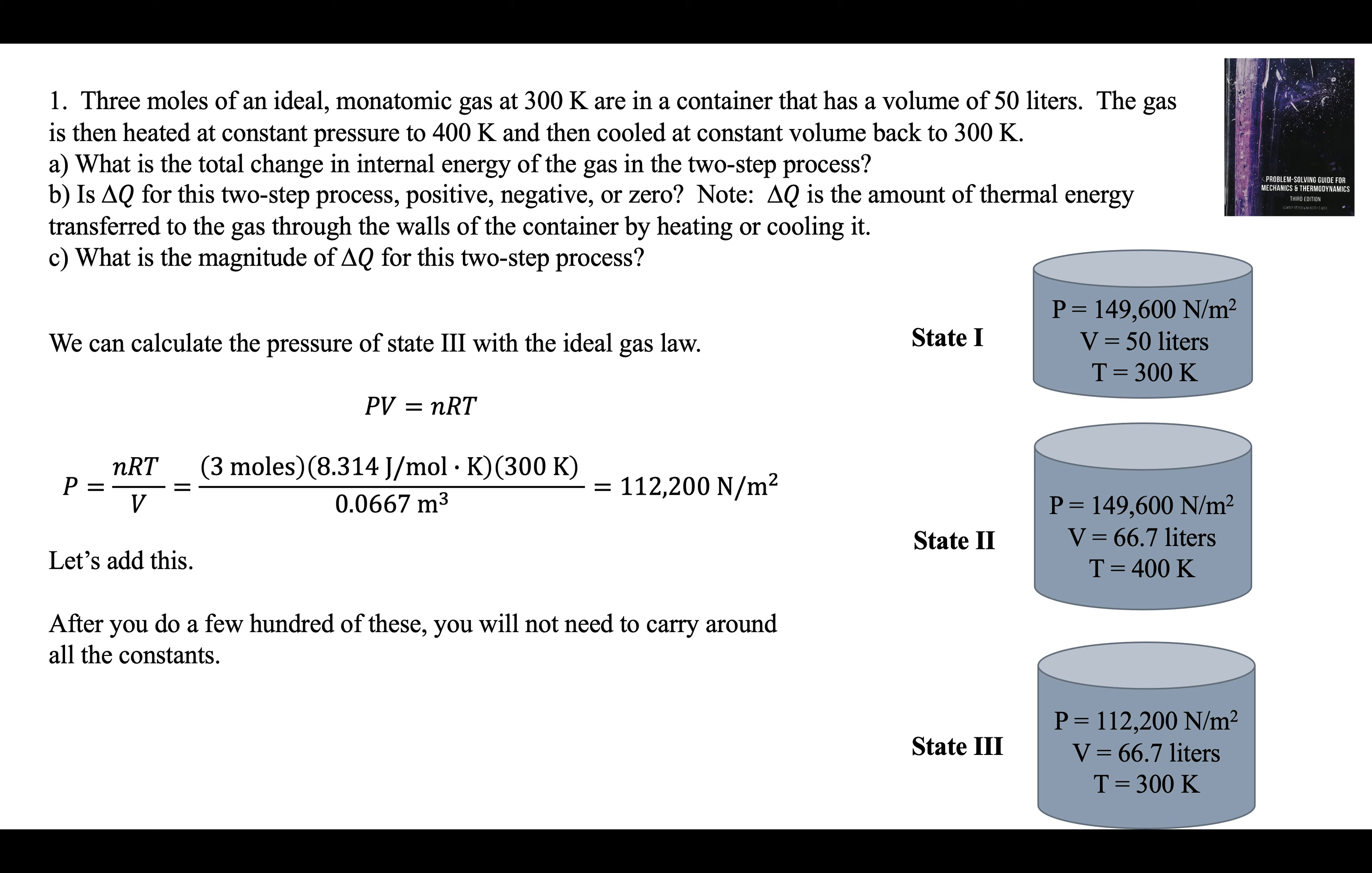After you do a lot of these, you're not going to carry around all these constants, like three moles and the gas constant. You can just use proportionality. From one to two, the temperature goes up by a factor of four-thirds, from 300 to 400. If it's constant pressure, the volume has to increase by that same factor. Four-thirds of 50 is 66.7.